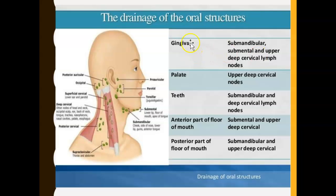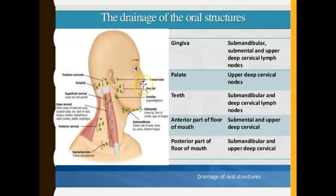This table outlines where the lymph from the gums drains — their checkpoint is either the submandibular, submental, or upper cervical lymph nodes. The fluid from the gingiva gets drained and filtered into the submandibular, the submental, or even the upper cervical lymph nodes. The palate, which is the roof of your mouth, also drains into the upper deep cervical nodes.